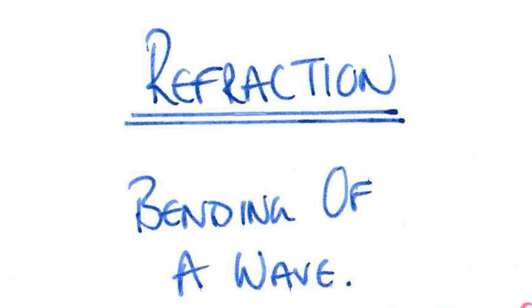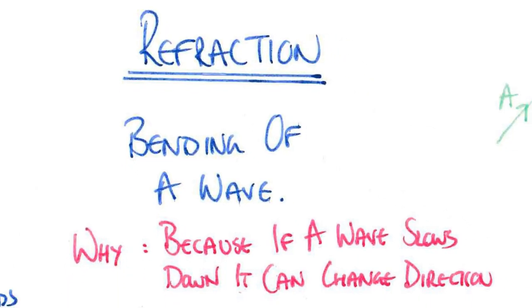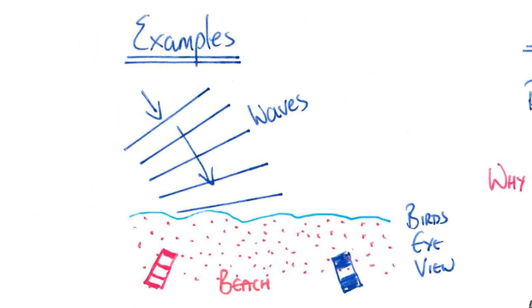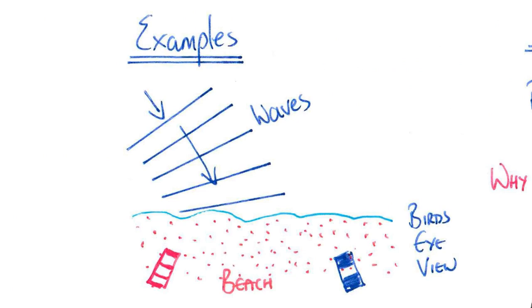Refraction is the scientific word for bending of a wave. The reason that waves bend—light waves, sound waves, or earthquake waves—is that if they slow down, waves can change direction. Here's an example: this is a bird's eye view. Imagine you're flying above a beach. What you actually see is the water waves sort of change direction as they enter towards the beach, and this is because as they approach the beach they slow down.